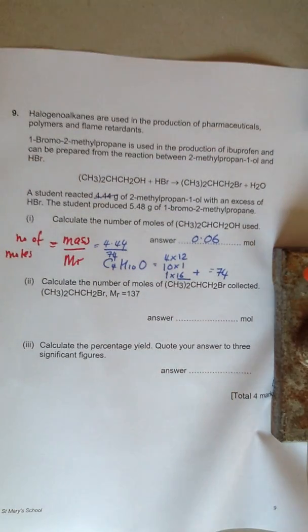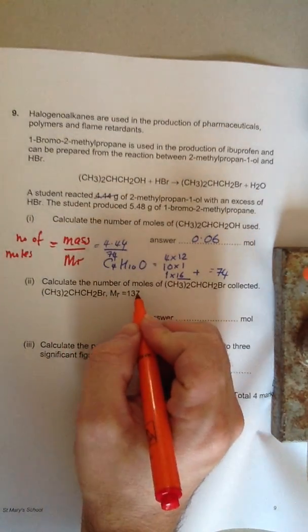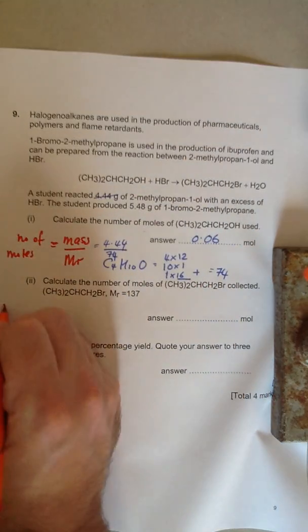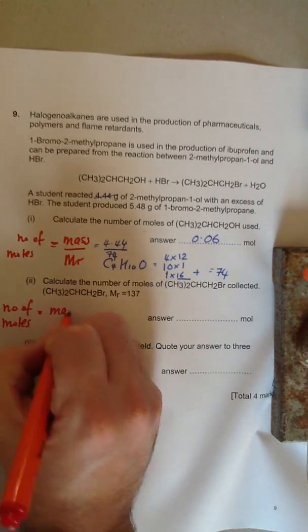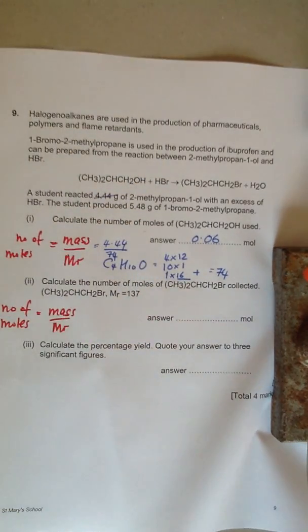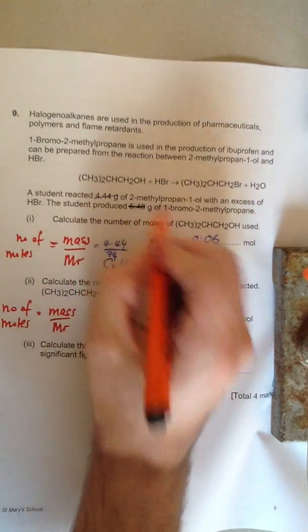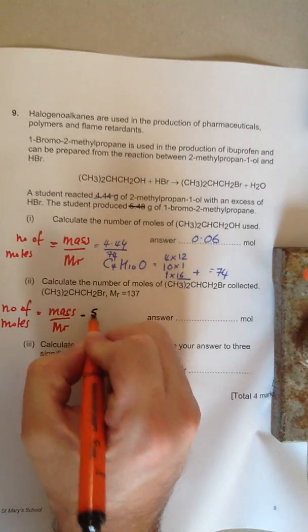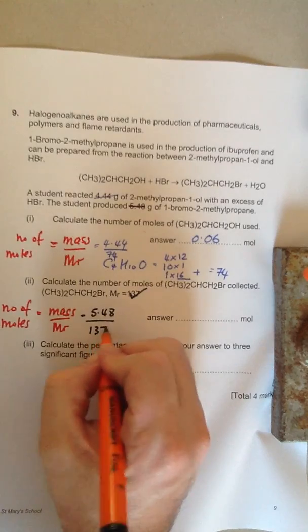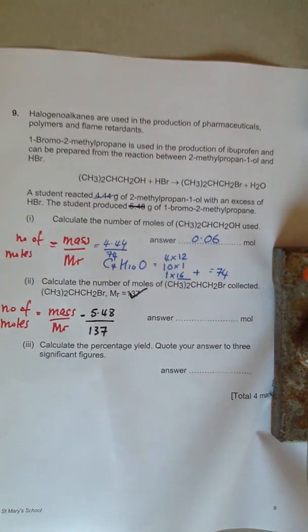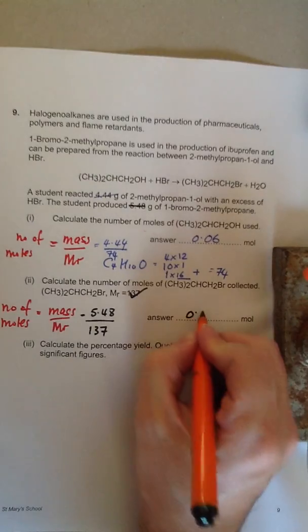Same procedure for the next part. It says calculate the number of moles of the CH3 twice CHCH2Br that were collected, and the exam board is giving us the MR. So we can say the number of moles is the mass in grams divided by the MR. The mass we're told in the rubric is 5.48. The MR we're told in the rubric is 137. If you put that in the calculator, the number you get is 0.04.